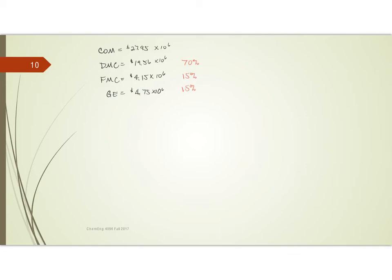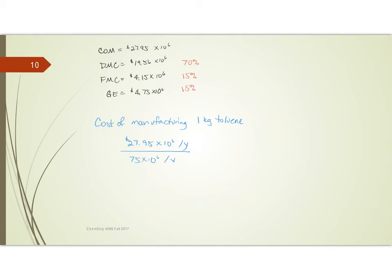The problem also asks for the cost of manufacturing per kilogram of toluene. To find this, we take the total annual cost — approximately 27.95 times 10 to the sixth dollars per year — and divide by the production rate of 75 times 10 to the sixth kilograms per year. The per-year units cancel, giving approximately $0.373 per kilogram.